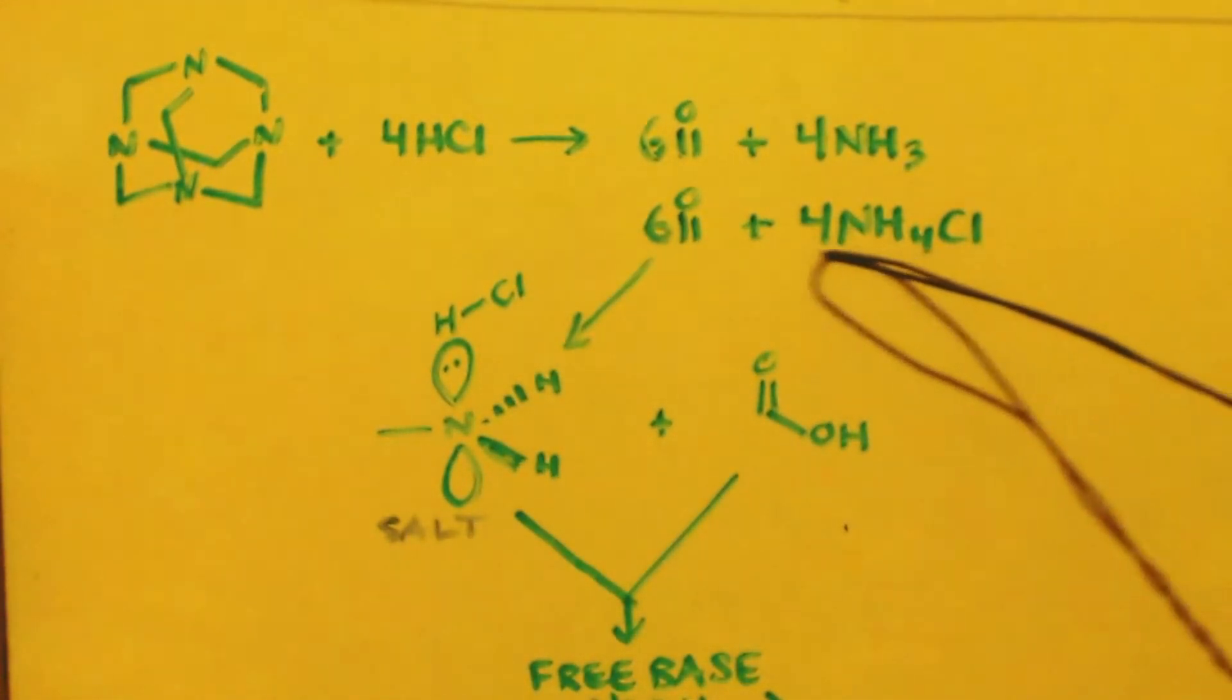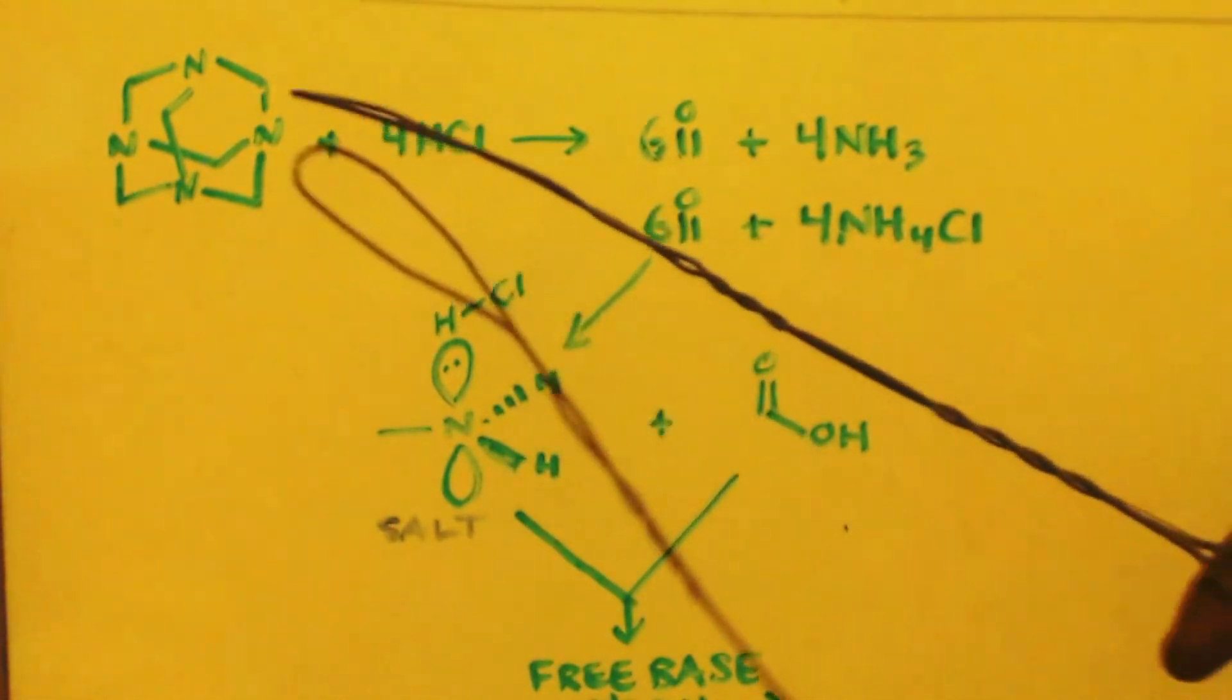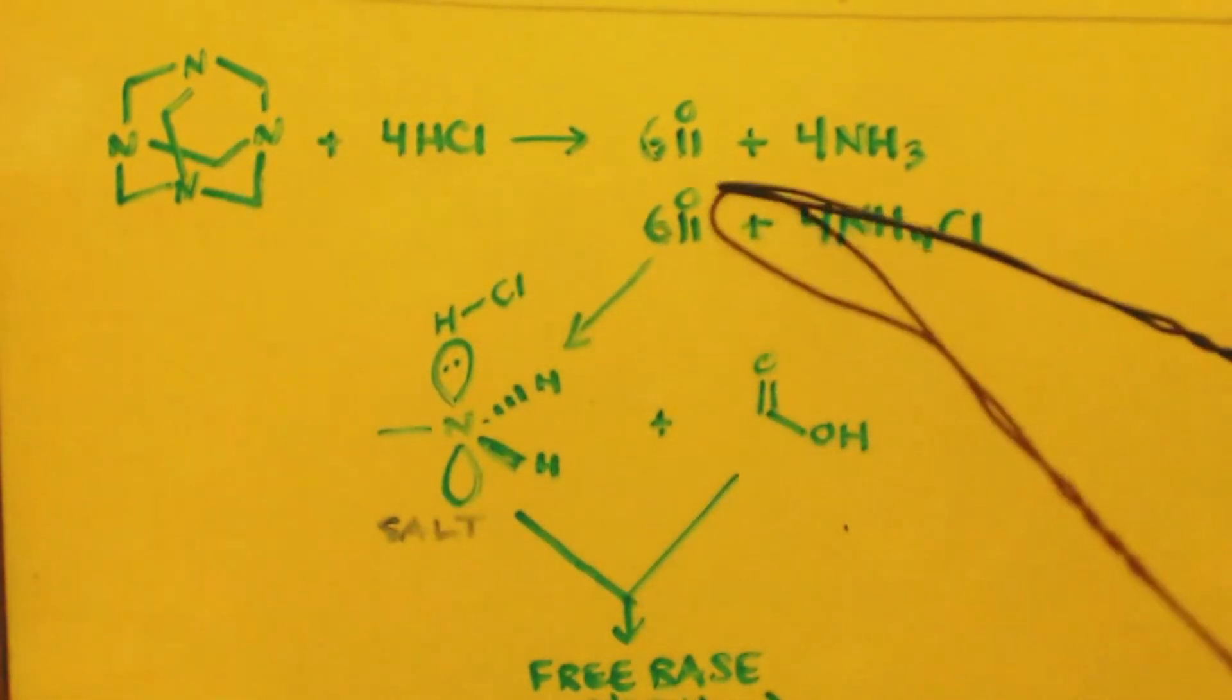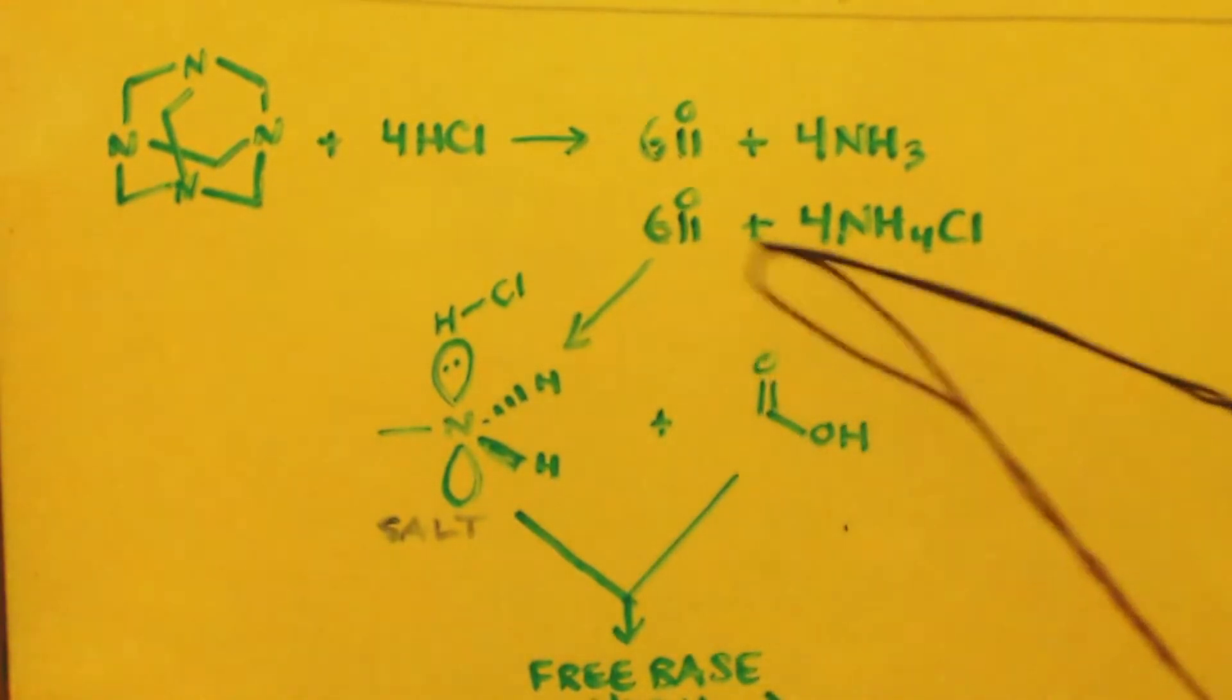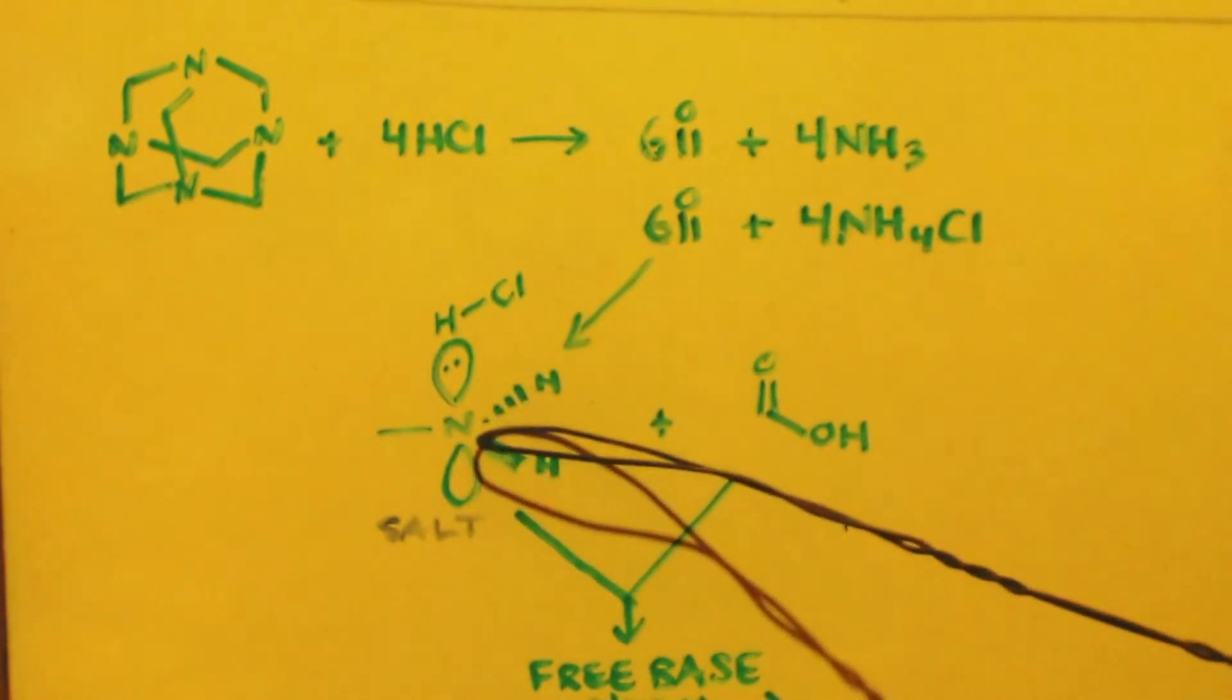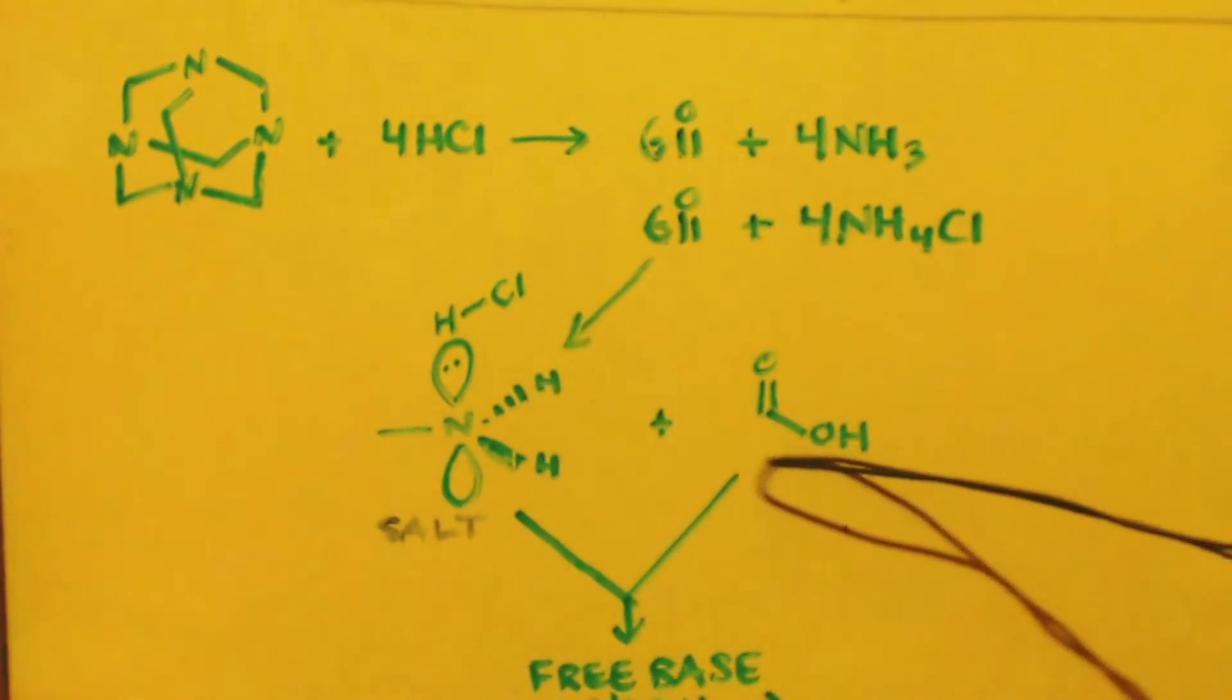Four moles of ammonium chloride. You see what I'm saying? If you add the HCl, it breaks it down into the exact ratio and components that you want to make methylamine. Now remember, when you're doing the reaction of making methylamine, you're going to make your methylamine salt, the hydrogen chloride salt. You're also going to make formic acid.